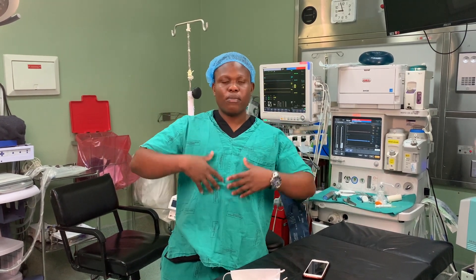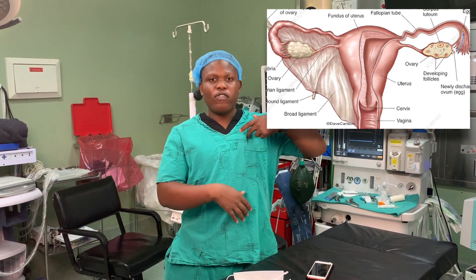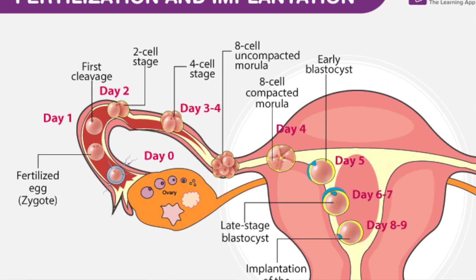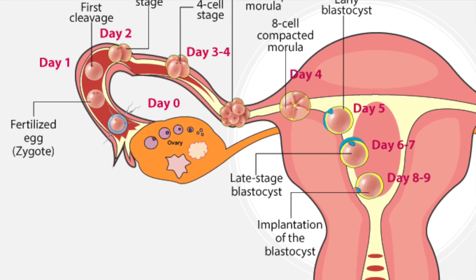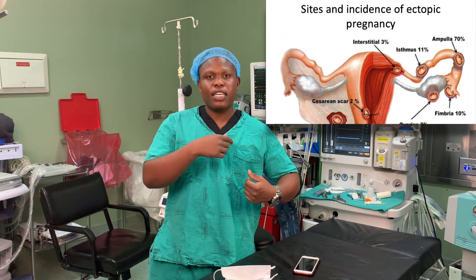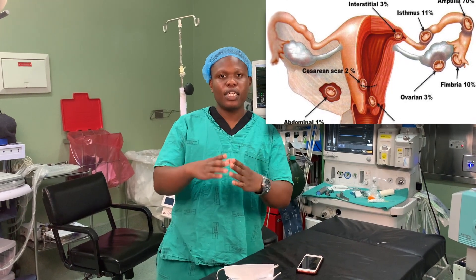In the female reproductive system, you have the ovaries. During ovulation, the egg has to move through the tubes until it gets fertilized. Once fertilized, it then moves to the endometrium. So if it attaches or implants anywhere other than the endometrium or uterus — it can be in the tube, interstitial area — then it's an ectopic pregnancy.